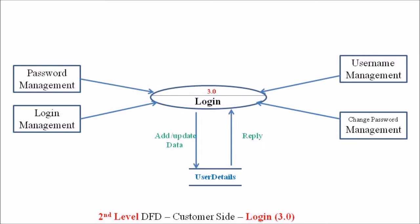For the third process, the login process: the level 2 DFD at the customer site for the login process includes four independent entities, one data store, and the login process. The login process is associated with the entities: password management, login management, user management, and change password management. A customer can log in using a username and password, which are verified by the login process using algorithms that search the user detail data store. Once the login credentials are verified correctly, the customer can proceed to the next process on the web portal.